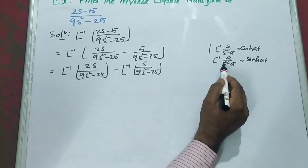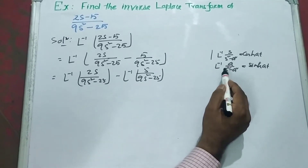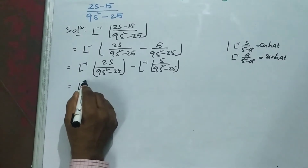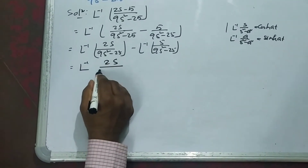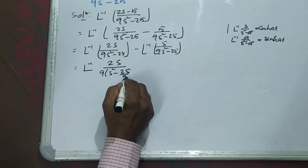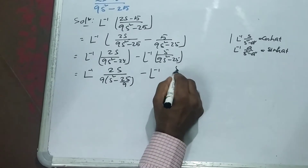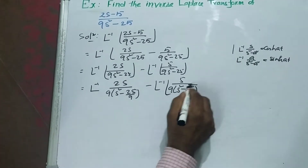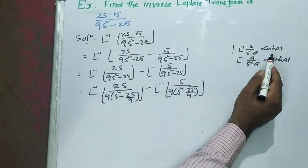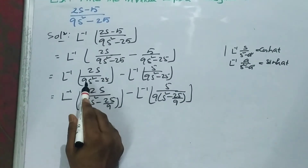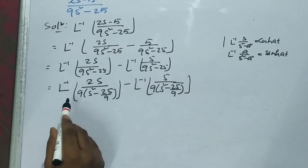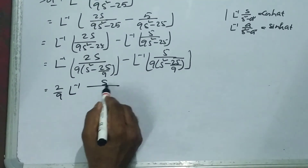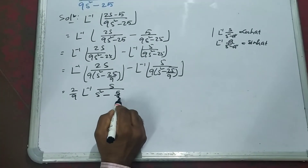In this problem the coefficient of s squared must be 1 in our formulas, but here the coefficient is 9. So we take 9 as common from the denominator. Then 2 by 9 goes outside with L inverse of s by (s squared minus 25 by 9), which is s squared minus (5 by 3) whole square.